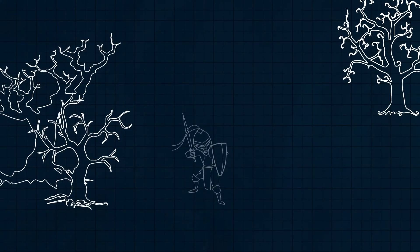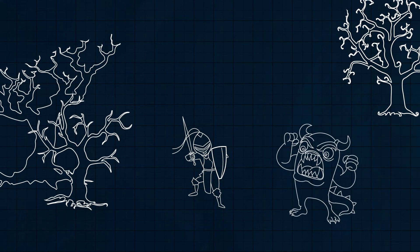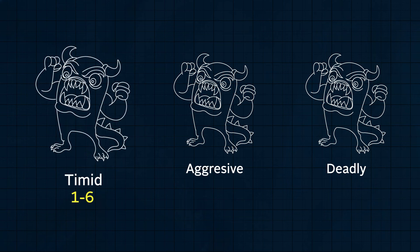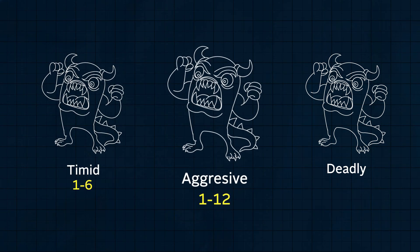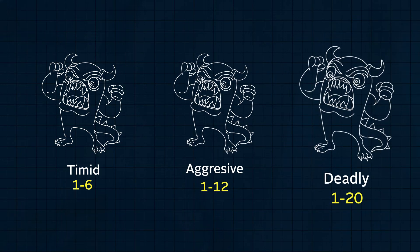Now let's return to last week's problems. We were in a video game being attacked by a monster which was equally likely to be timid, aggressive, or deadly. Timid monsters deal 1 to 6 damage uniformly, aggressive monsters deal 1 to 12, and deadly monsters deal 1 to 20. For the first problem, we wanted to know the expected value of the monster's first attack.